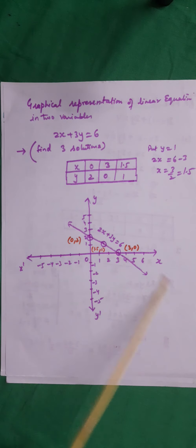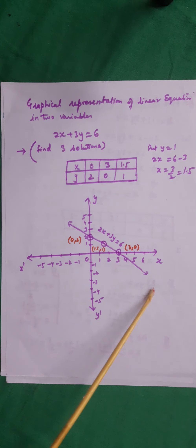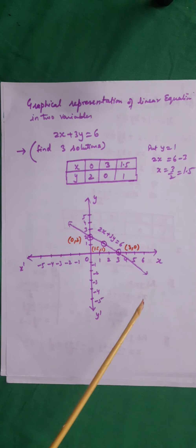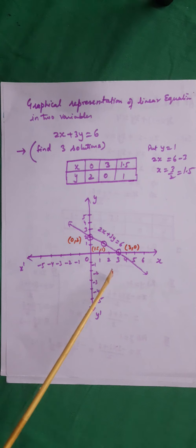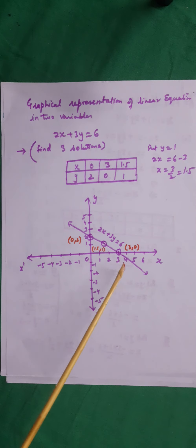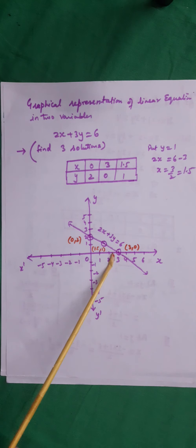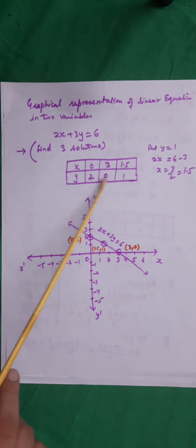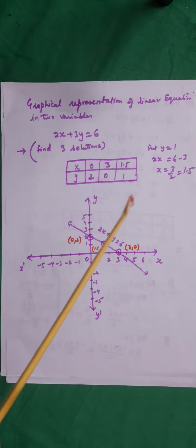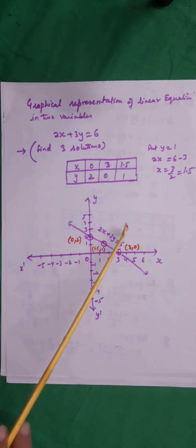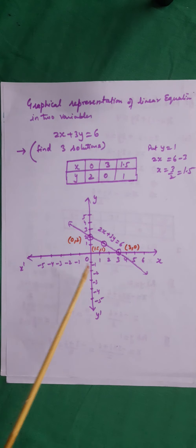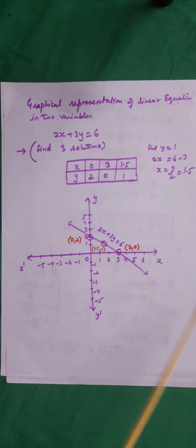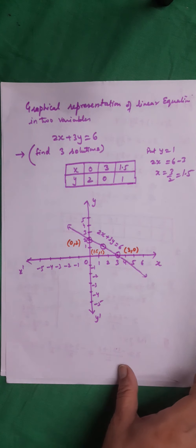This line can be extended to infinity and is a collection of infinite points. We can draw a line with a minimum of two points, but I always suggest taking three. If you have made a calculation mistake, one of the three points will not lie on the line, telling you the graph is incorrect. Always find a minimum of three solutions for any linear equation in two variables.